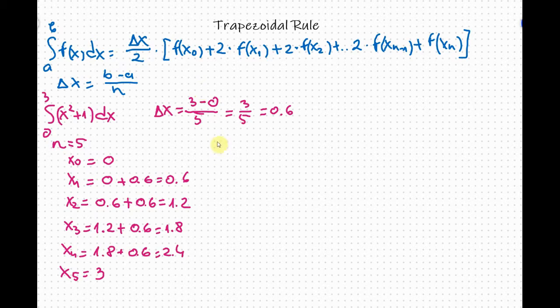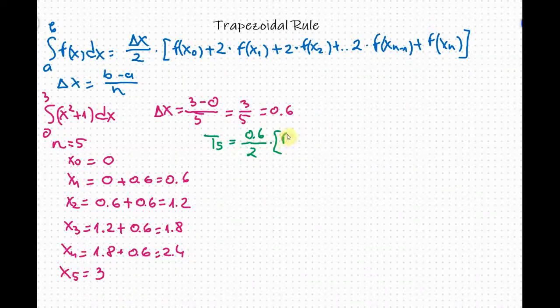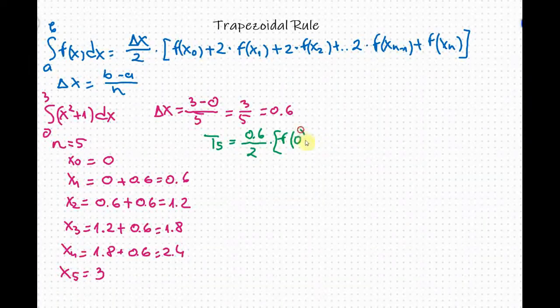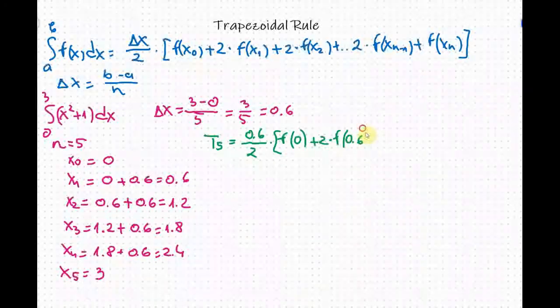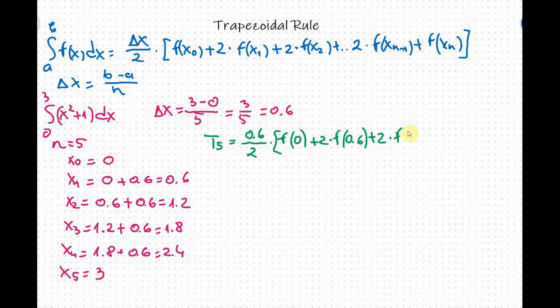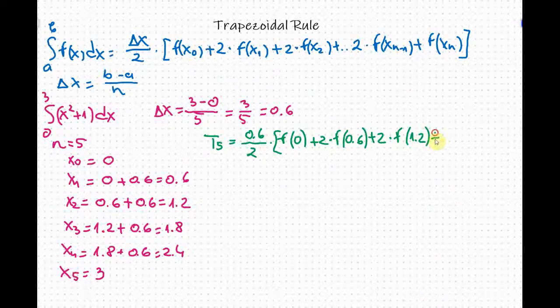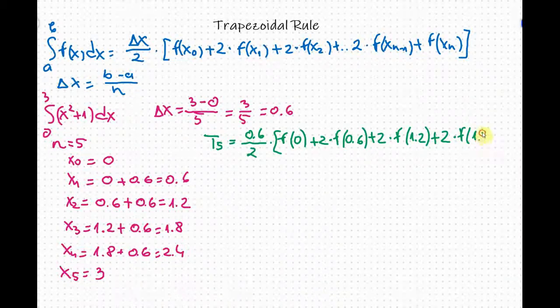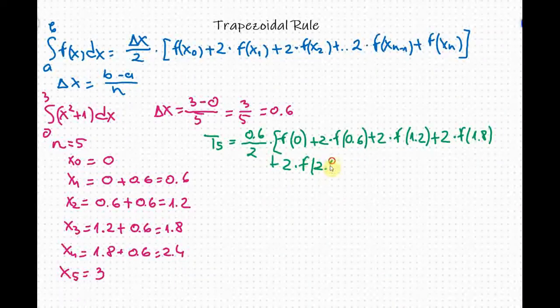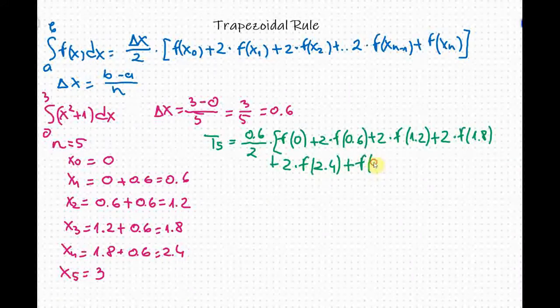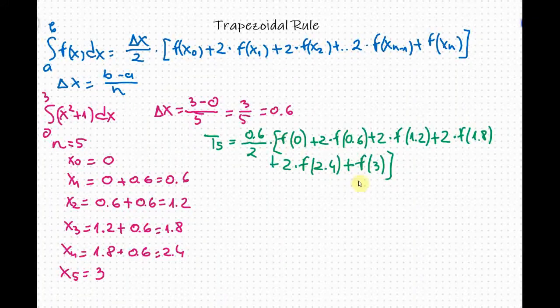This is T sub 5 equals delta x over 2 times the sum. For delta x we got 0.6 over 2, and now f of x sub 0, for x sub 0 we got 0, plus 2 times f of 0.6 plus 2 times f of 1.2 plus 2 times f of 1.8 plus 2 times f of 2.4 plus f of 3. Remember that we do not multiply the first and the last term by 2.